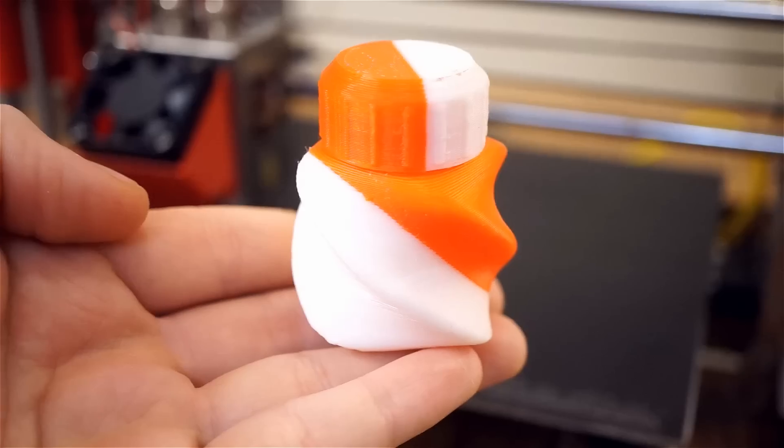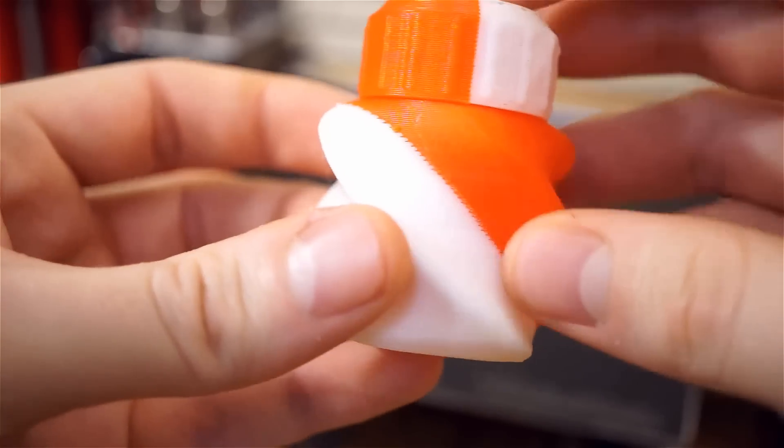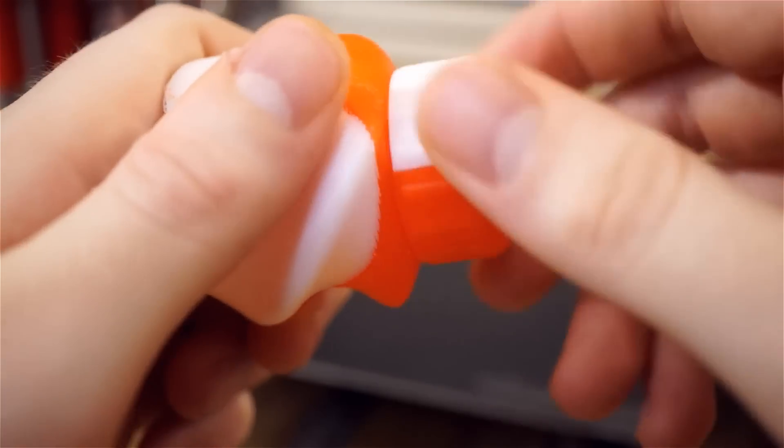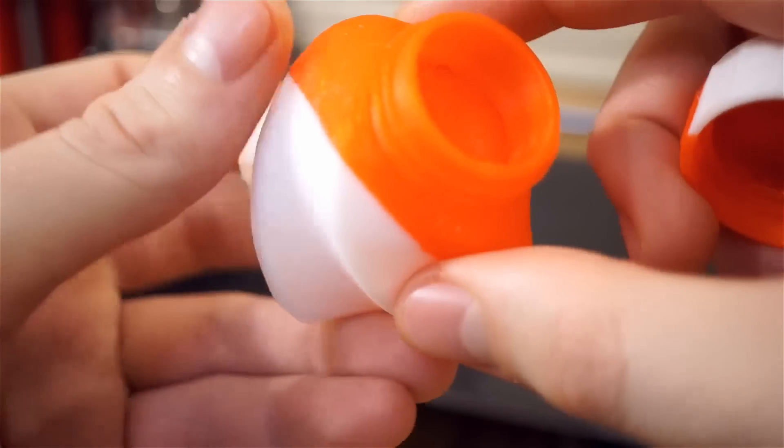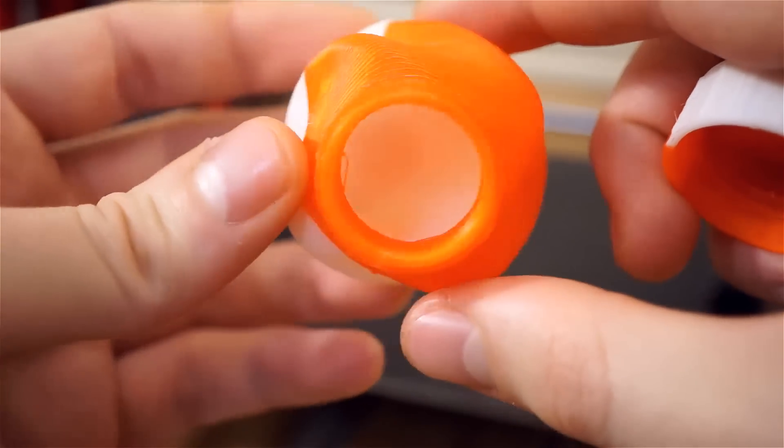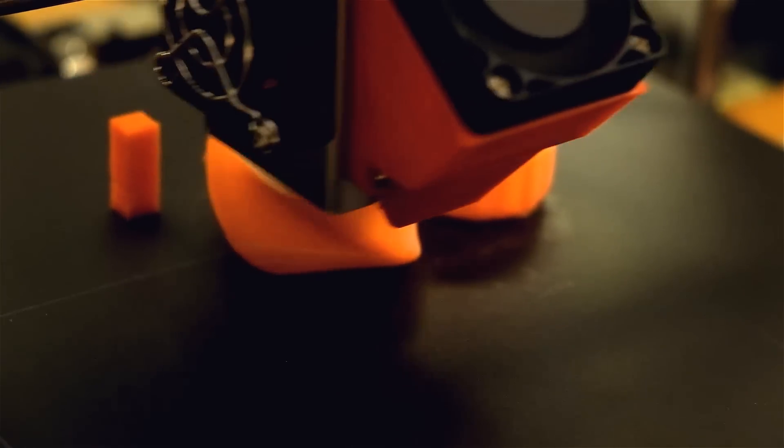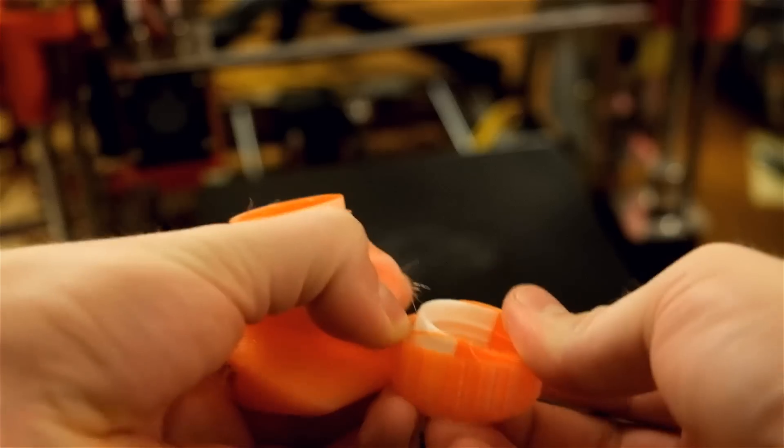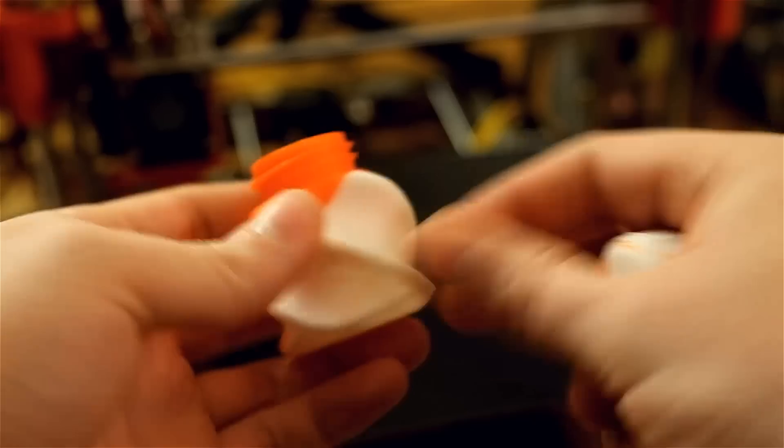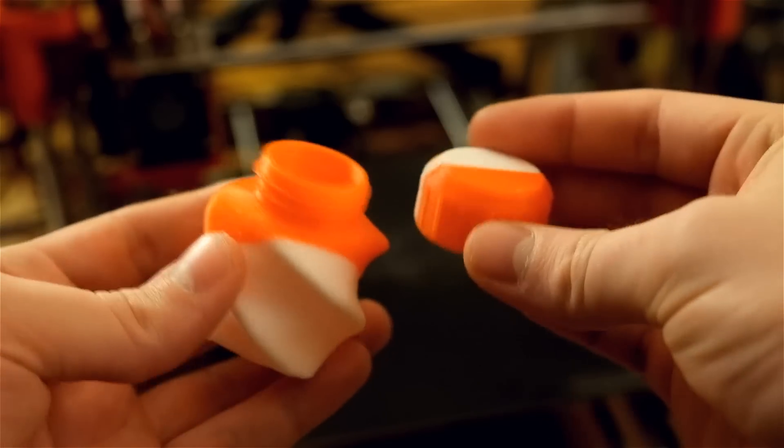This model is a good test of printing two colors on the same model and to test how well the cap will screw on at the top. I turned on the wipe and prime tower as well as the ooze shield settings in Cura. The ooze shield really helped block the other nozzle's filament from oozing when it was not in use. The ooze shield easily peeled away and revealed a clean model and the top screwed on tightly.